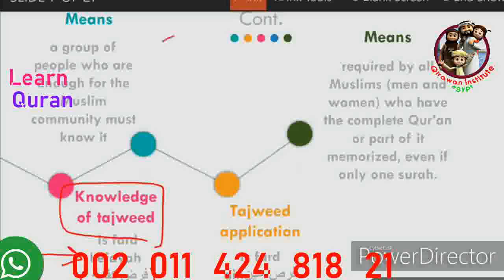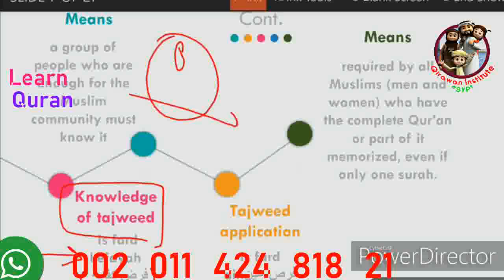Knowing these theoretical rules is fard kifaya — meaning when a group of people sufficient for the Muslim community knows them, it is enough for the rest. So if we have a Muslim community and only one person knows the tajweed rules, all the rest of the community can pass with nothing on them. But if no one knows the tajweed rules, the entire Muslim community carries the sin of not taking it seriously.